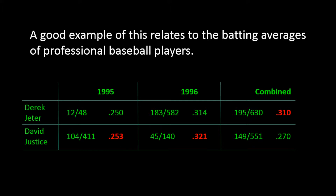In 1995, David Justice's batting average was .253, compared with Derek Jeter's .250. And in 1996, David Justice had a batting average of .321, compared with Derek Jeter's .314. So in both years, we can see David Justice had a higher batting average.